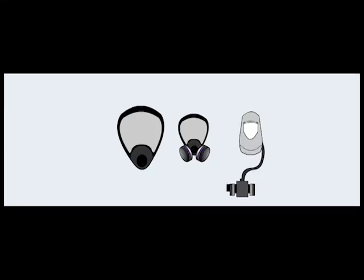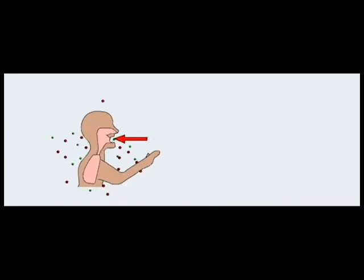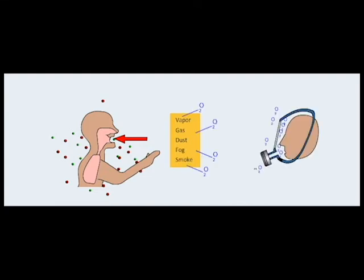A respirator is a device that protects personnel from inhaling a harmful substance in the form of a vapor, gas, dust, fog, or smoke. Some respirators protect workers in environments that contain dangerously low levels of oxygen.